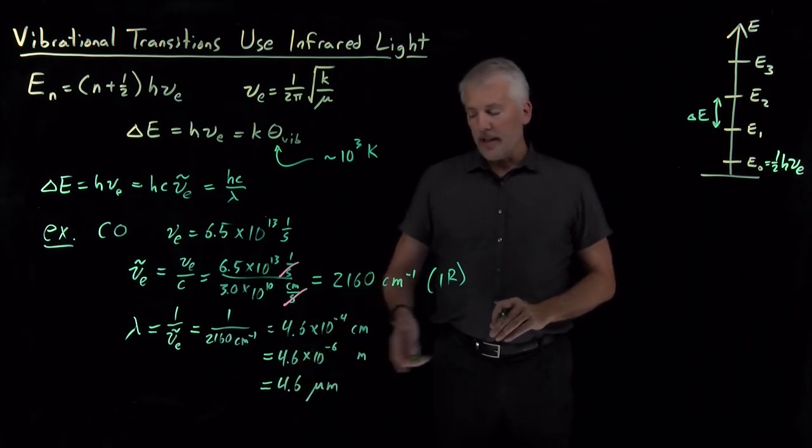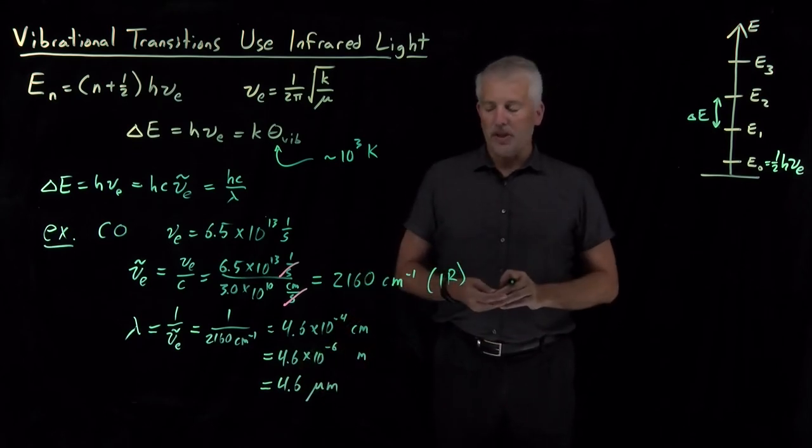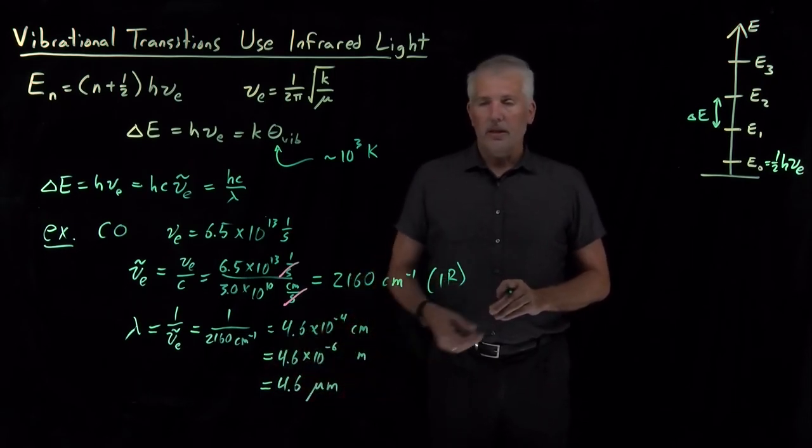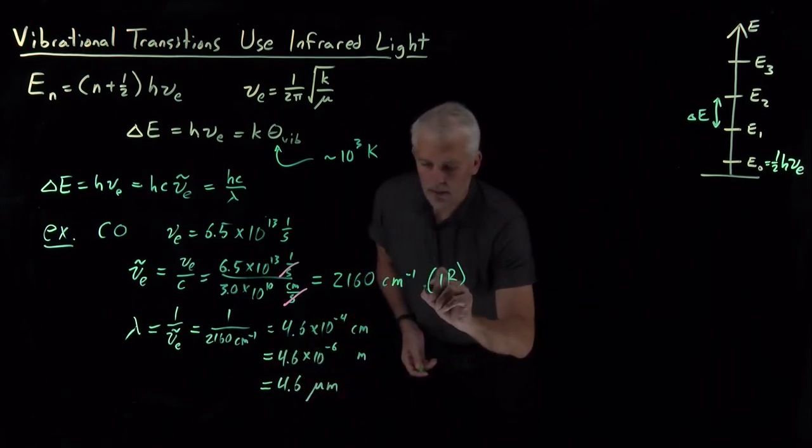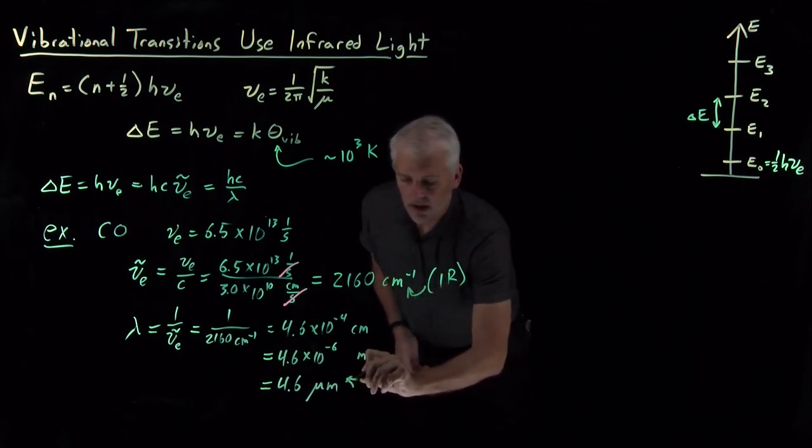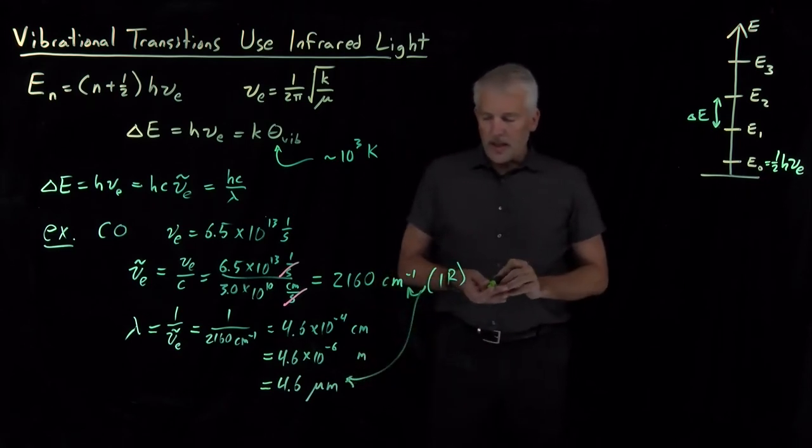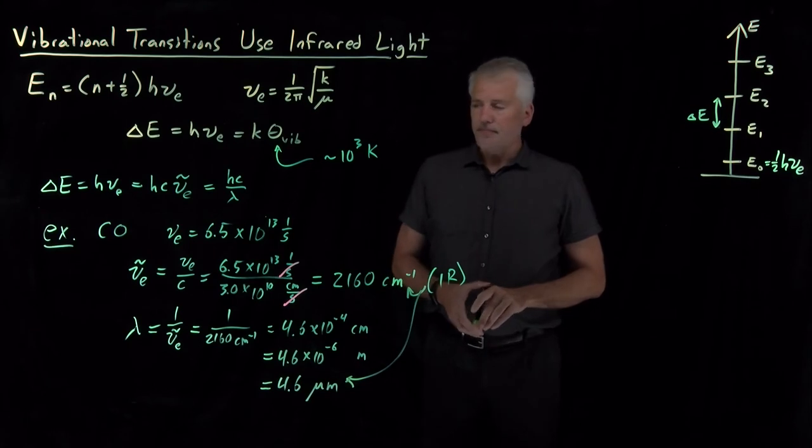And, again, that wavelength is in the region of the electromagnetic spectrum that we call the infrared portion of the spectrum. So, both that number and that number tell us that, in fact, the light we need is infrared light.